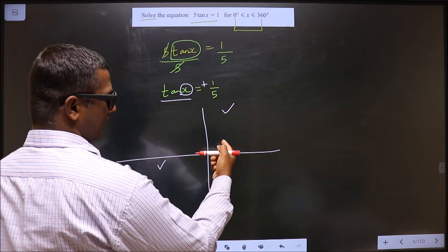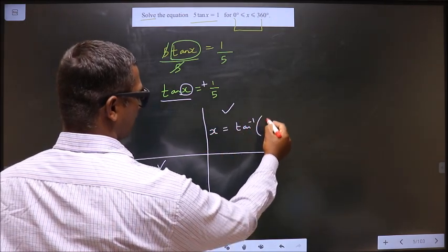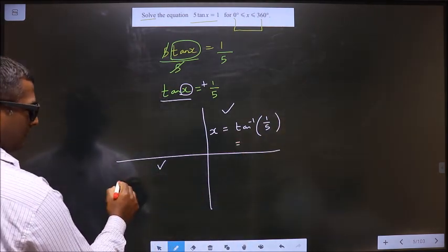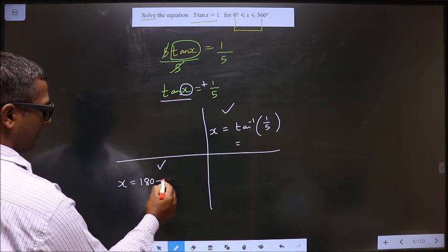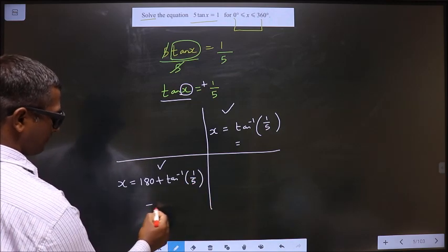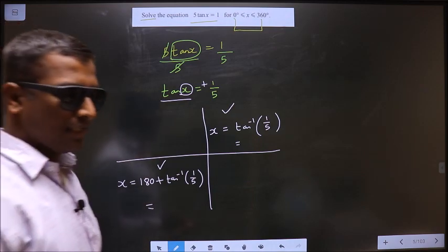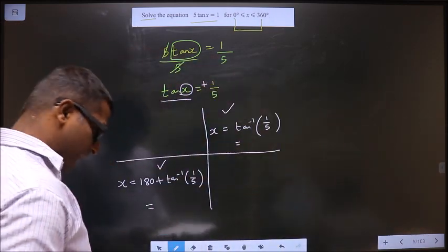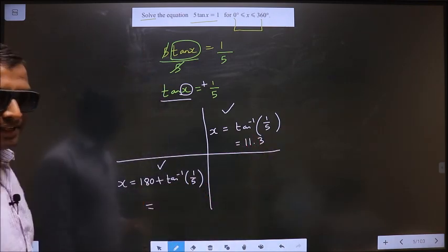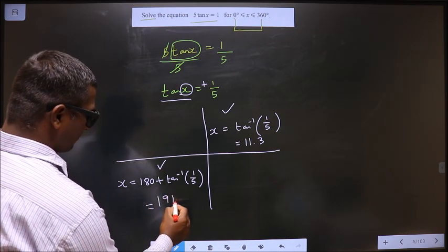So to get an angle in the first, it is directly tan inverse 1 by 5. To get an angle in the third, it is 180 plus tan inverse 1 by 5. Now you put this in the calculator. You get the answer to be 11.3. You put this in the calculator. You get the answer to be 191.3.